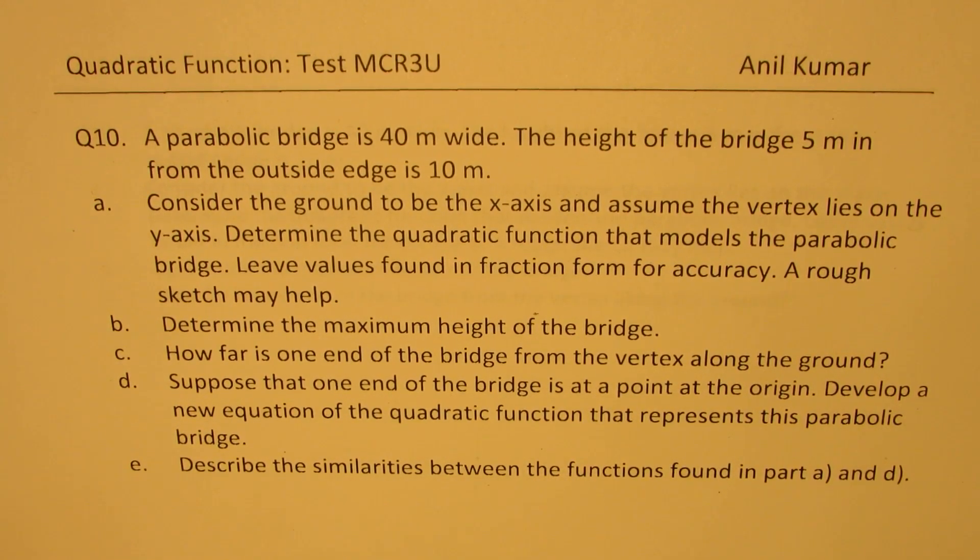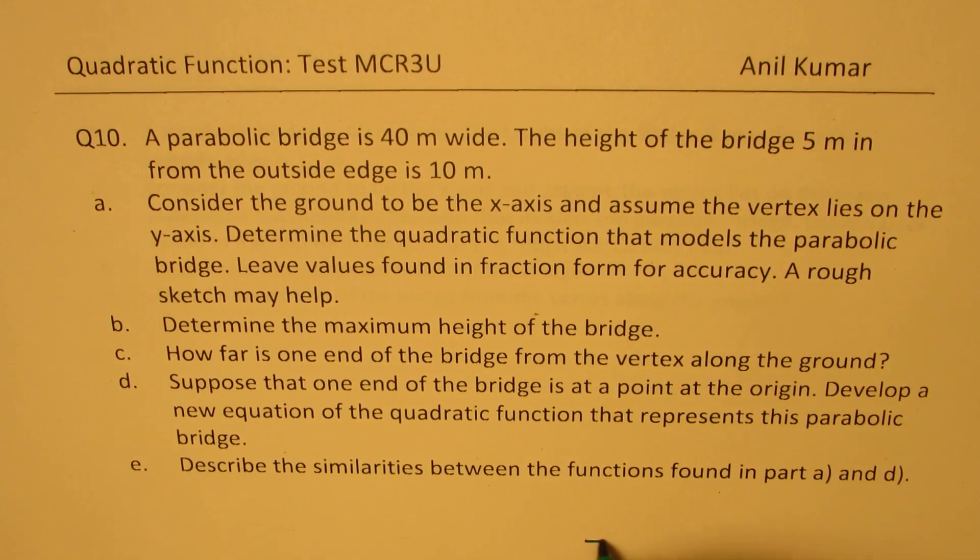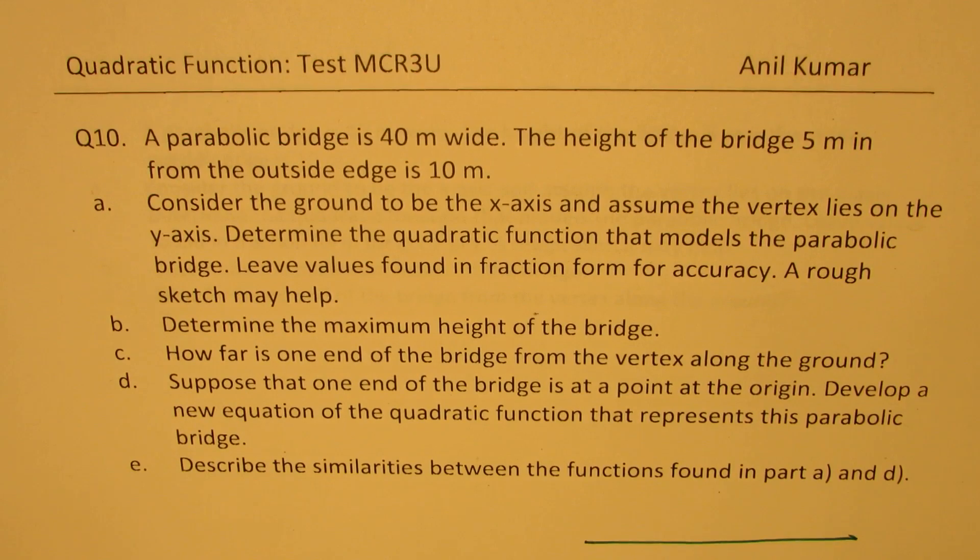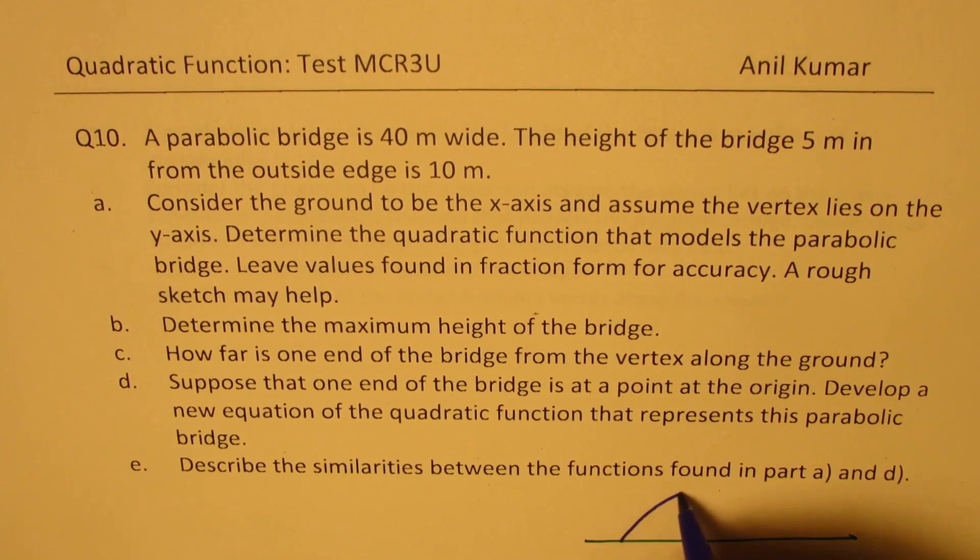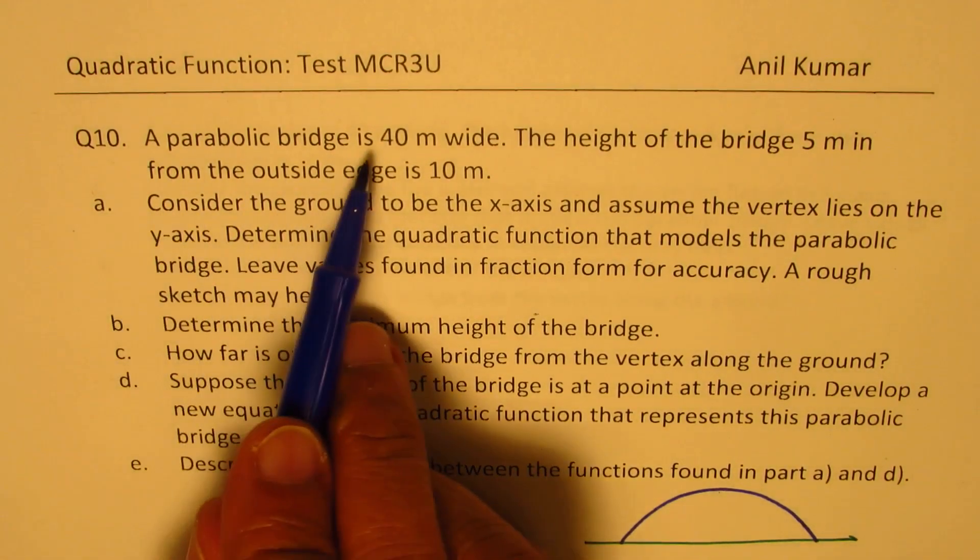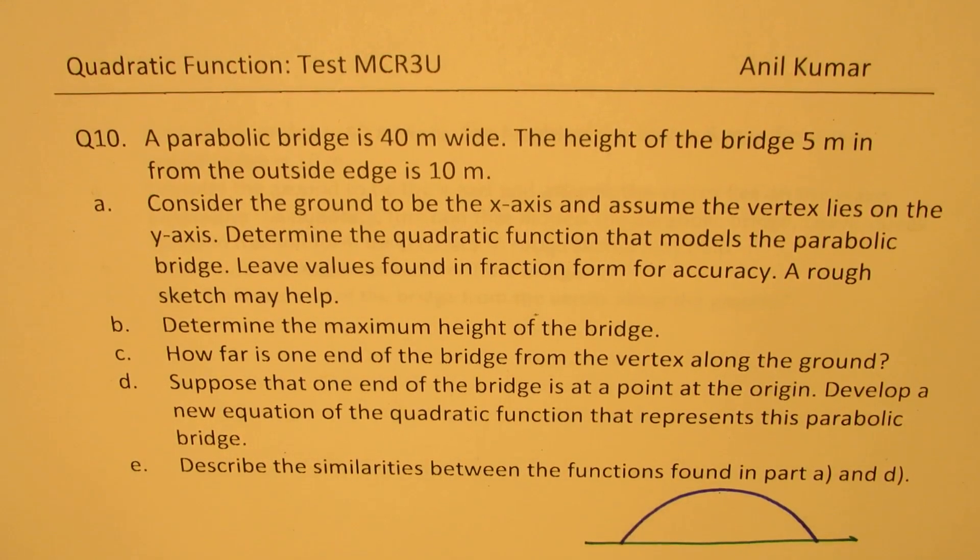The height of the bridge 5 meters in from outside edge is 10 meters. That is a critical statement. It means what? It means that, well let us say we have a bridge here, right, so 40 meter wide, that means the whole width here is 40 meters.